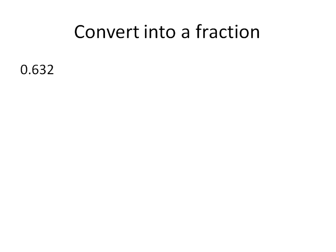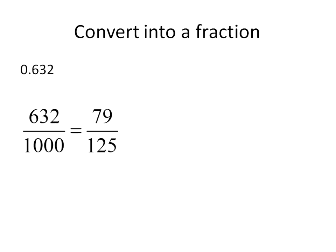Let's convert 0.632 into a fraction. We look at what placeholder the last digit is in: tenths, hundredths, thousandths. Since it's in the thousandths place, that means it's 632 out of a thousand. To reduce it down to lowest terms, we get 79 over 125. Converting these fractions initially is pretty quick. If it's in the thousandths column, you put it over one thousand; if it's in the ten-thousandths, you put it over ten thousand. That's how you convert a terminating decimal into a fraction.